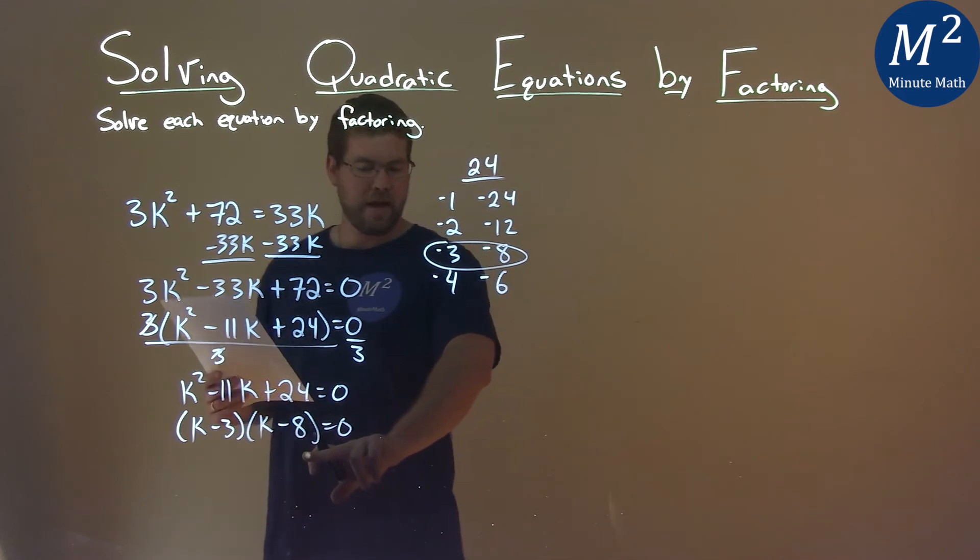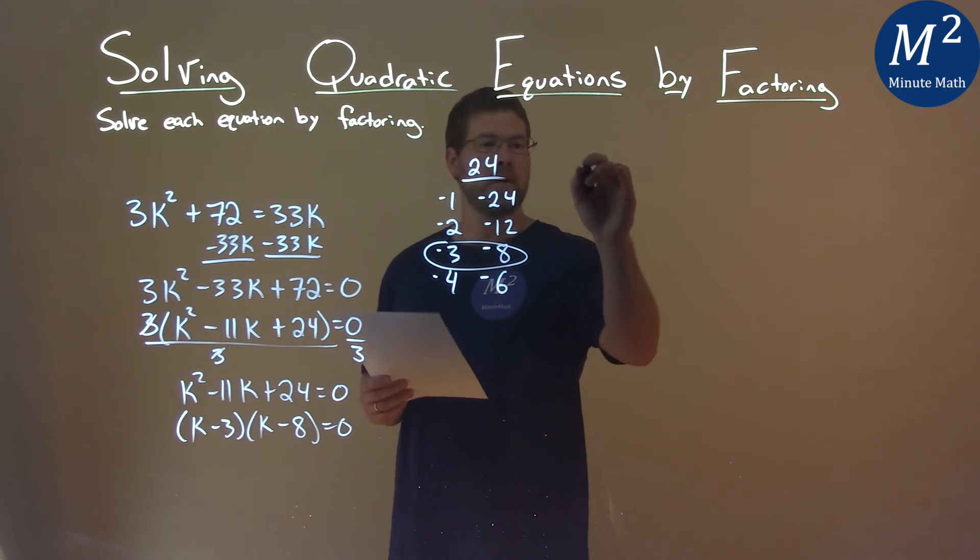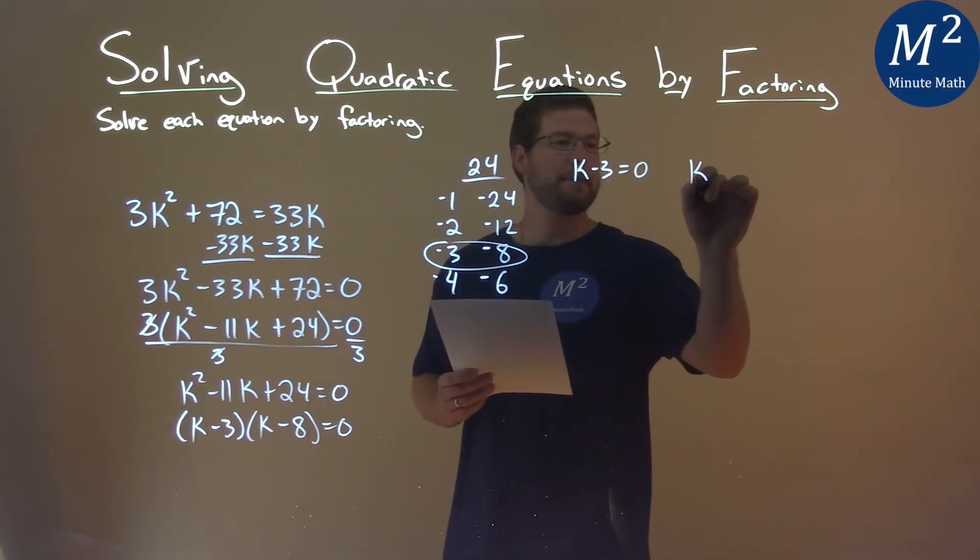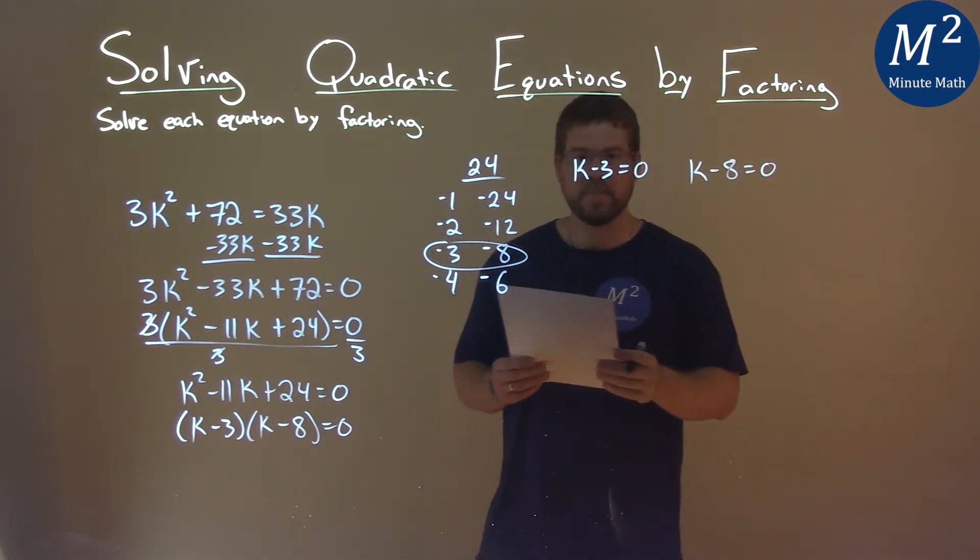So now since we have this thing factored, we can set both parts individually equal to 0 to solve. So we take k minus 3 equals 0 and k minus 8 equals 0. And now we have to solve each part individually.